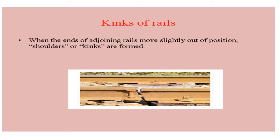Next comes the kink of rail. When the ends of adjoining rails move out of position, then shoulders or kinks are formed. We can also say that if there is a lateral shift in the rail due to a loose joint, then it is also known as a kink. You can see here the ends of the adjoining rail move out of position slightly — this is known as a kink.